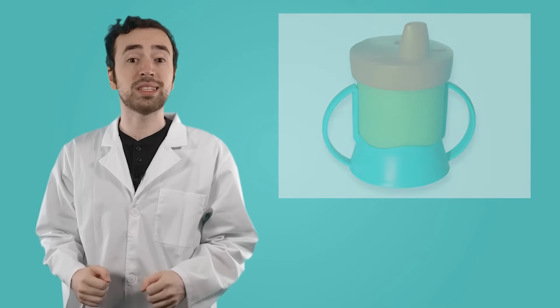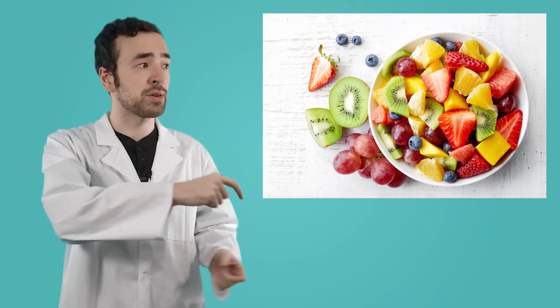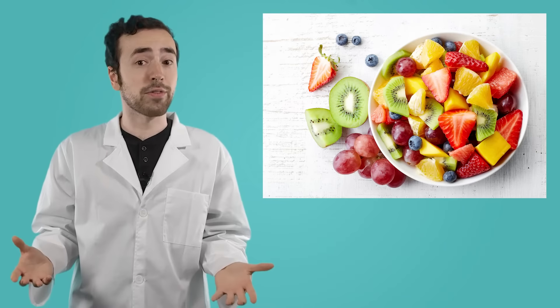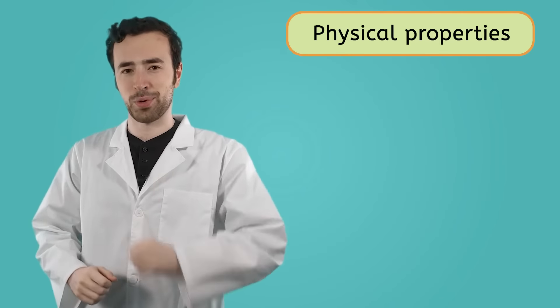Well, some mixtures can be separated pretty easily. Like, say, a fruit salad. If you wanted to separate that, you could just take your fingers and pluck out all the different kinds of fruit and separate them that way. It takes forever, but it's easy. However, not all mixtures can be separated so simply. When that's the case, we can use the physical properties of matter to separate them.